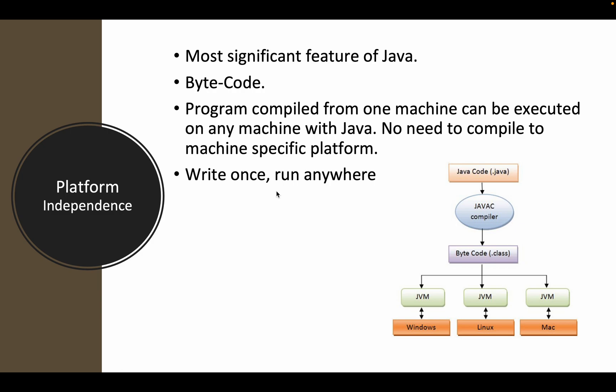The JRE acts as a virtual computer that interprets the bytecode and translates it for the host computer or the environment it is running on. Because of this, Java code can be written the same way for many platforms. It is even termed 'write once, run anywhere.' A program compiled on one machine can be executed on any machine with Java without the need for recompilation. As you can see in the diagram, the Java source file (.java) is compiled by the Java compiler into bytecode (.class file), which can be run on any platform — Mac, Linux, Windows — regardless of which platform created it. It is agnostic of the environment.